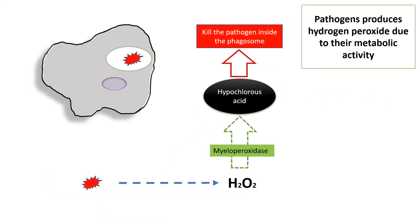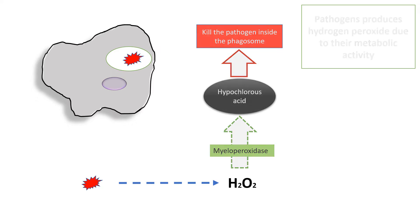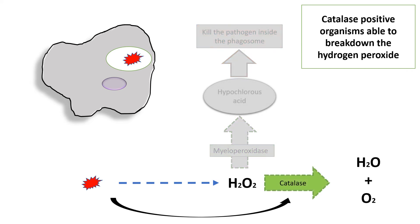Patients with CGD are typically more affected by catalase-positive organisms. Bacteria may produce hydrogen peroxide as a result of their metabolism, and phagocytic cells can utilize this hydrogen peroxide to form hypochlorous acid. In catalase-positive organisms, however, the hydrogen peroxide is broken down into water and oxygen by catalase, protecting these bacteria from the harmful effects of hydrogen peroxide or other derivatives.